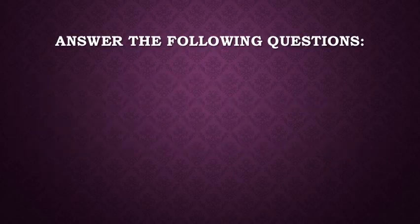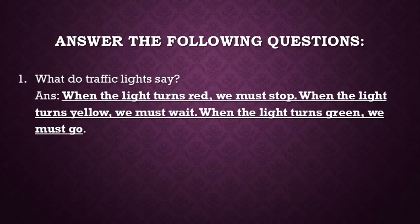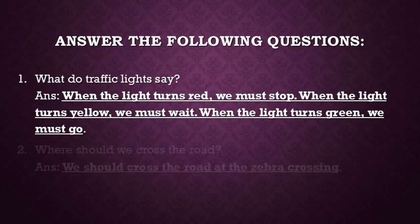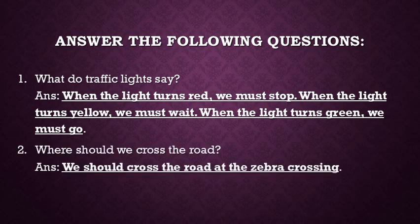Answer the following questions. Number 1: What do traffic lights say? Answer: When the light turns red, we must stop. When the light turns yellow, we must wait. When the light turns green, we must go. Number 2: Where should we cross the road? Answer: We should cross the road at the zebra crossing.